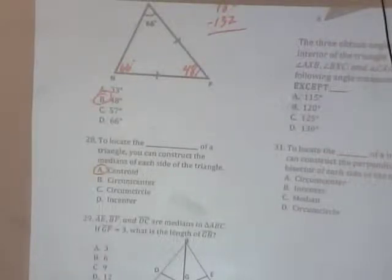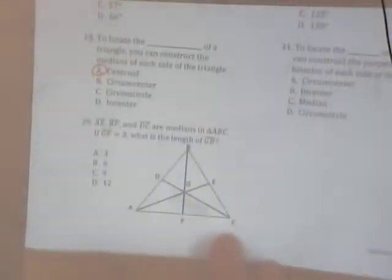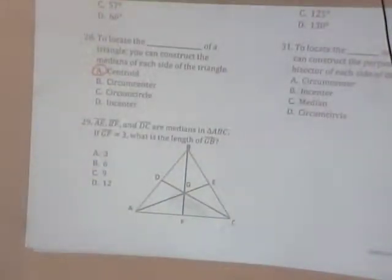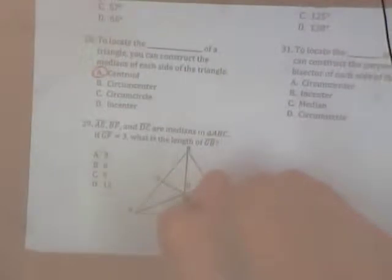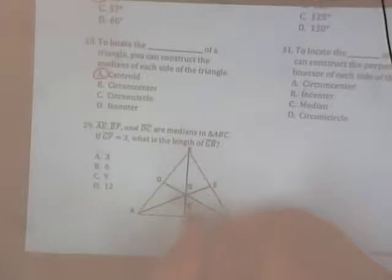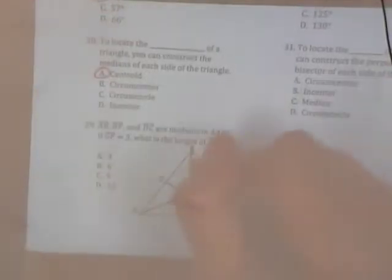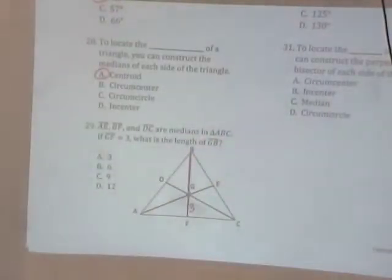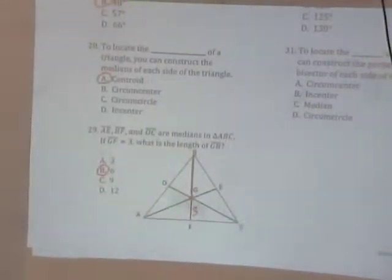Questions on 29 or 28? Alright, 29. A, E, B, F, and D, C are medians. So G is a centroid, we just talked about that. G, F, this is the short side, is 3. What is G, B, what's the long side? 6. Double it, right? Yup. Good. Questions on 29.